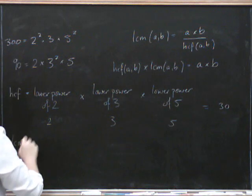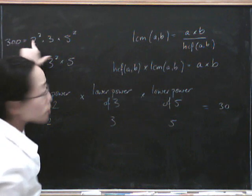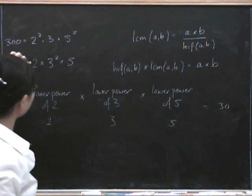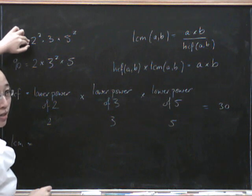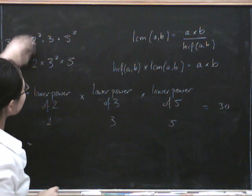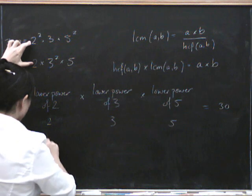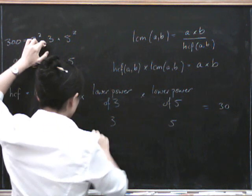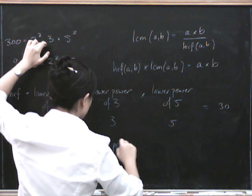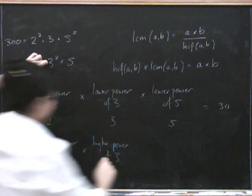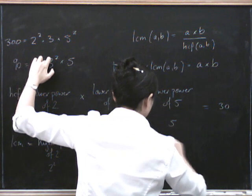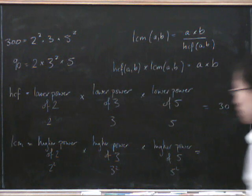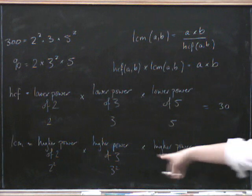Now for the lowest common multiple, we need a number divisible by all the factors of both. For the 2's, we take the higher power — 2 squared — because the number must be divisible by 2 squared; the lower power wouldn't cover that. Similarly, we take the higher power of 3, which is 3 squared, and the higher power of 5, which is 5 squared. So the lowest common multiple is 2 squared times 3 squared times 5 squared, which is 900.